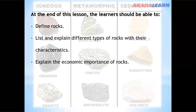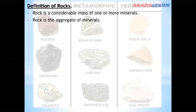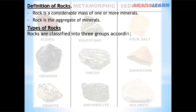A rock is a considerable mass of one or more minerals. A rock is the aggregate of a mineral. Rocks are classified into three groups according to their mode of formation.